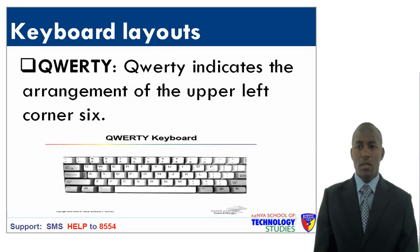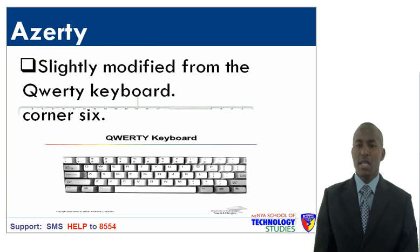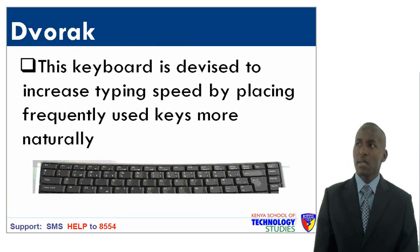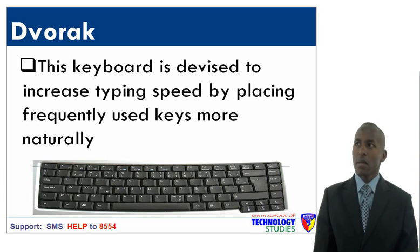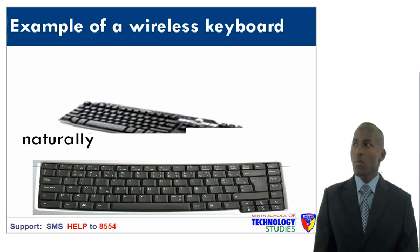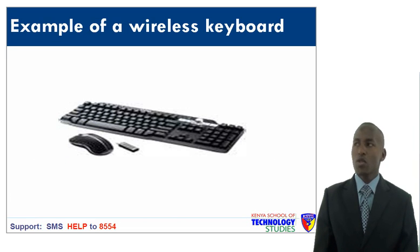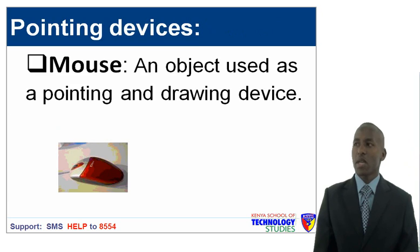Let us now look at keyboard layouts. The first is QWERTY, which indicates the arrangement of the upper left corner six keys of the keyboard. The other one is AZERTY, slightly modified from the QWERTY keyboard. The other is DVORAK — this keyboard is devised to increase typing speed by placing frequently used keys more naturally. Examples of a wireless keyboard and also a mouse are indicated in the pictorial diagram.